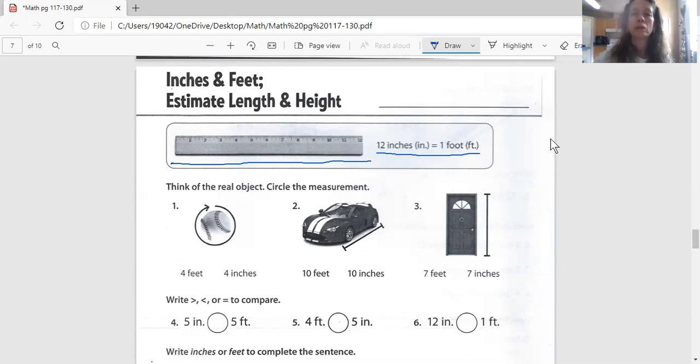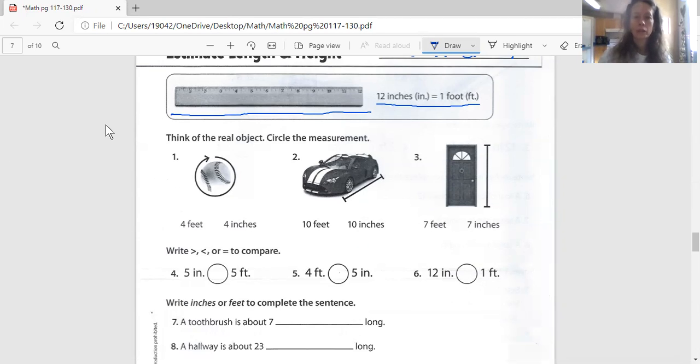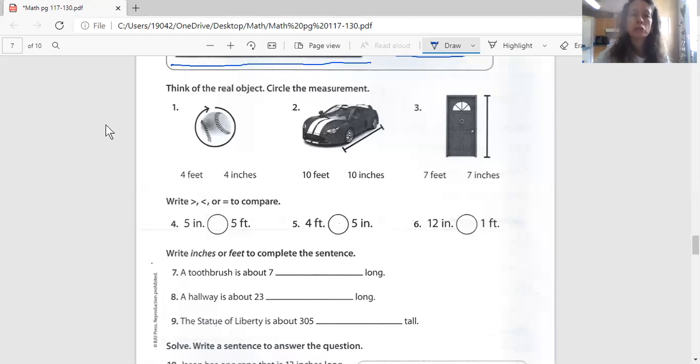Today, when we do our measurement, we're going to try to guess, do we think what we're looking at is measured in inches or measured in feet, which would be that big. Let's do name and date up here. Let's listen and repeat the directions together. It says, think of the real object. Circle the measurement. We have a baseball, and we're trying to figure out how far, how much around the baseball is. What is the distance around this baseball? Four feet or four inches are my choices.